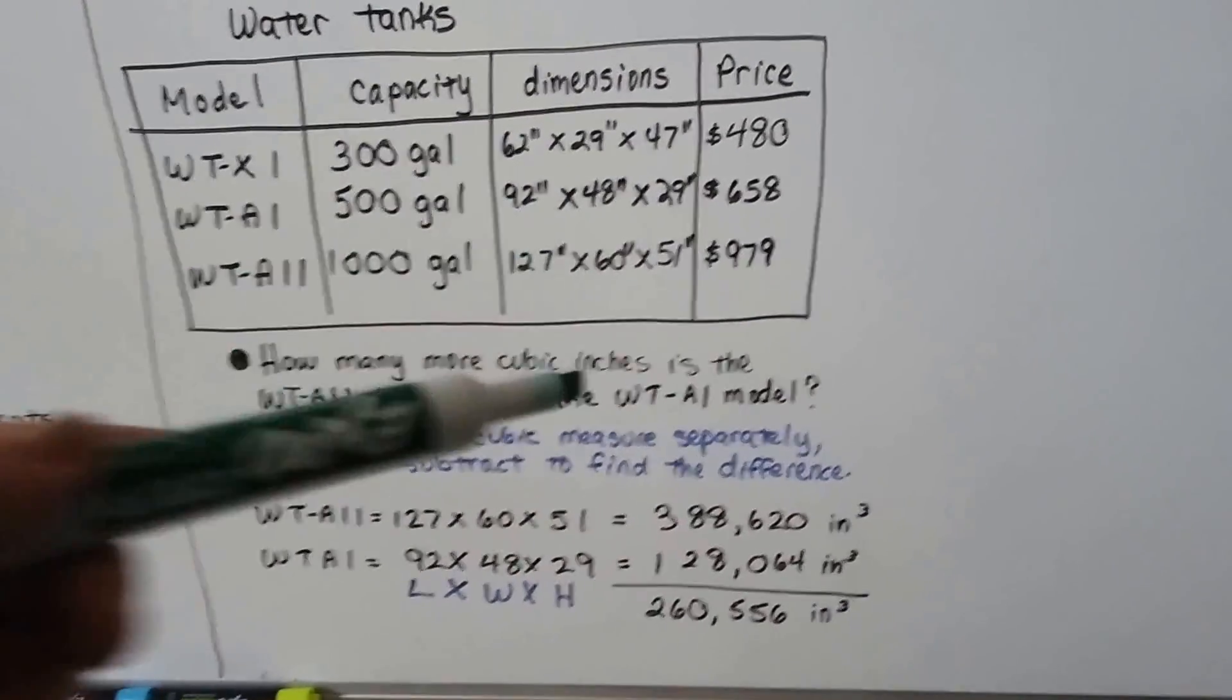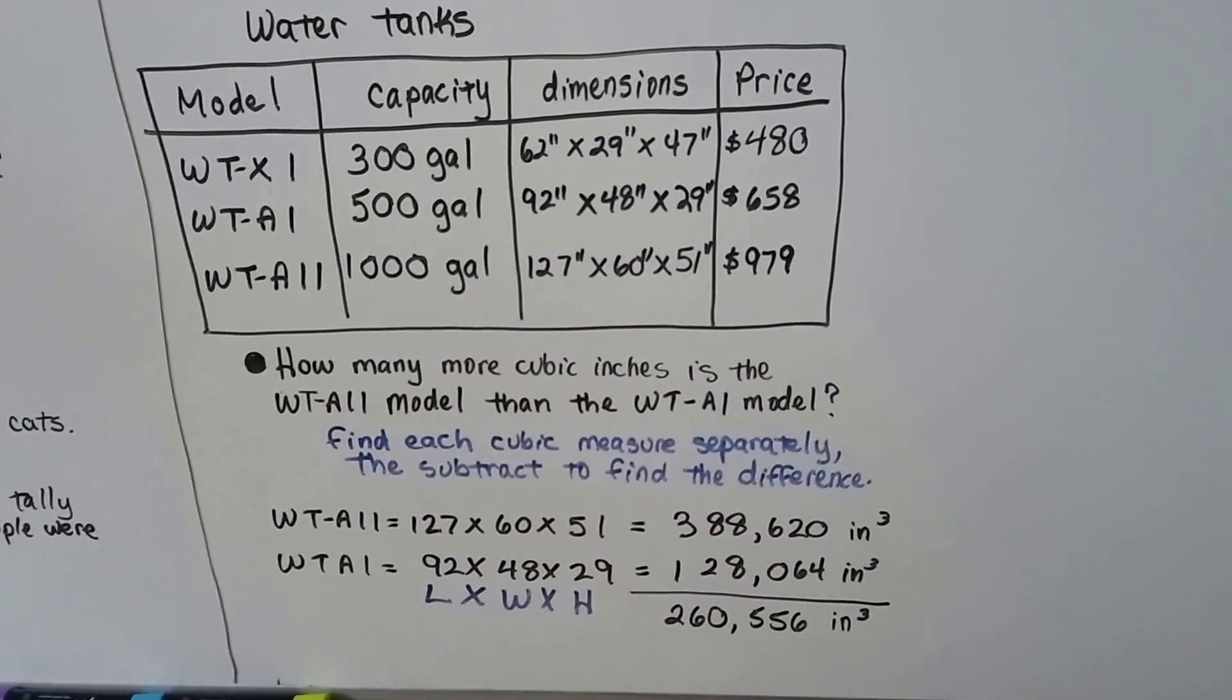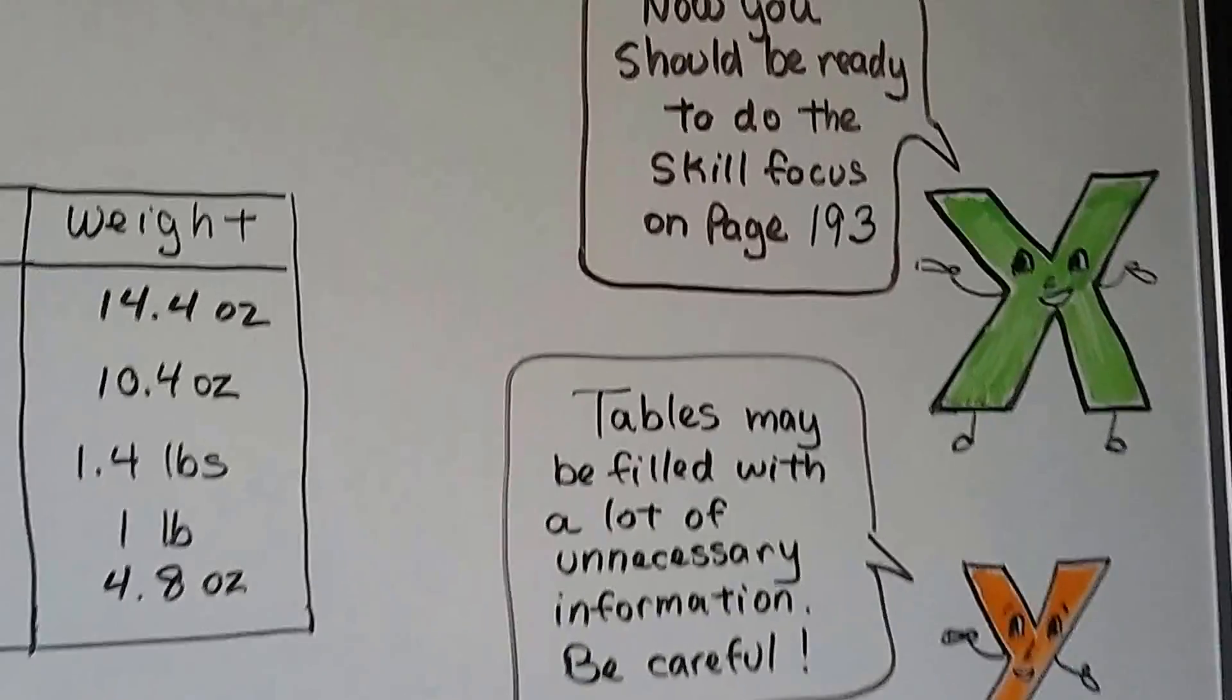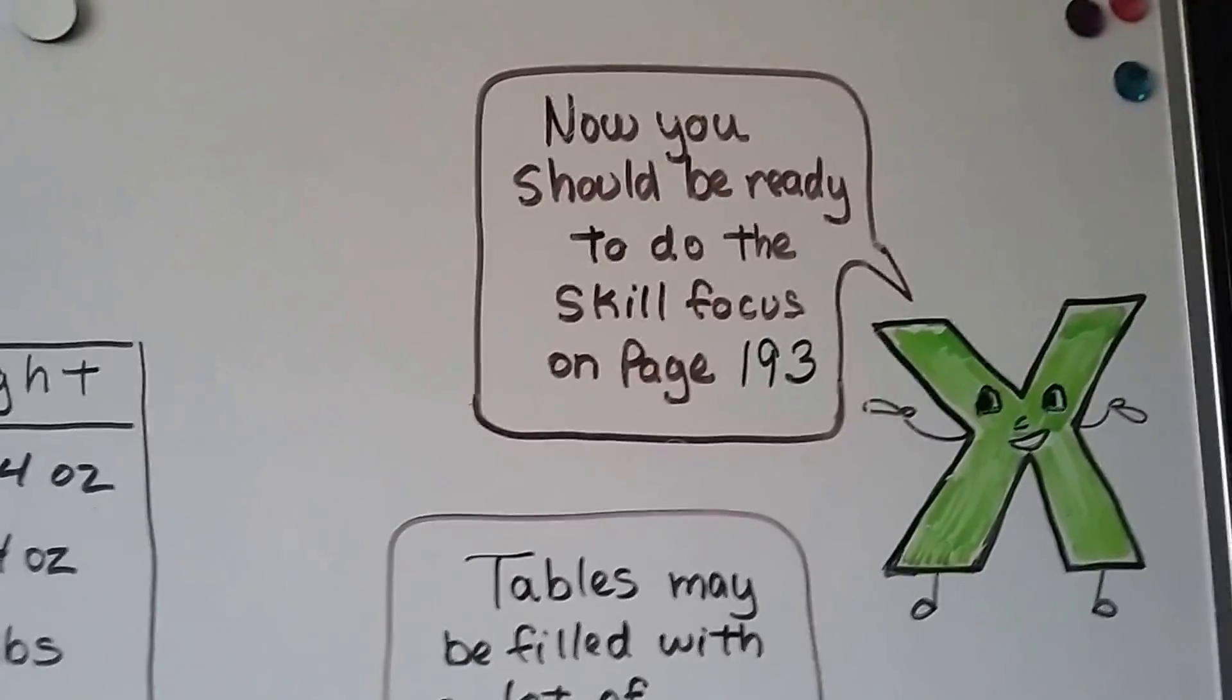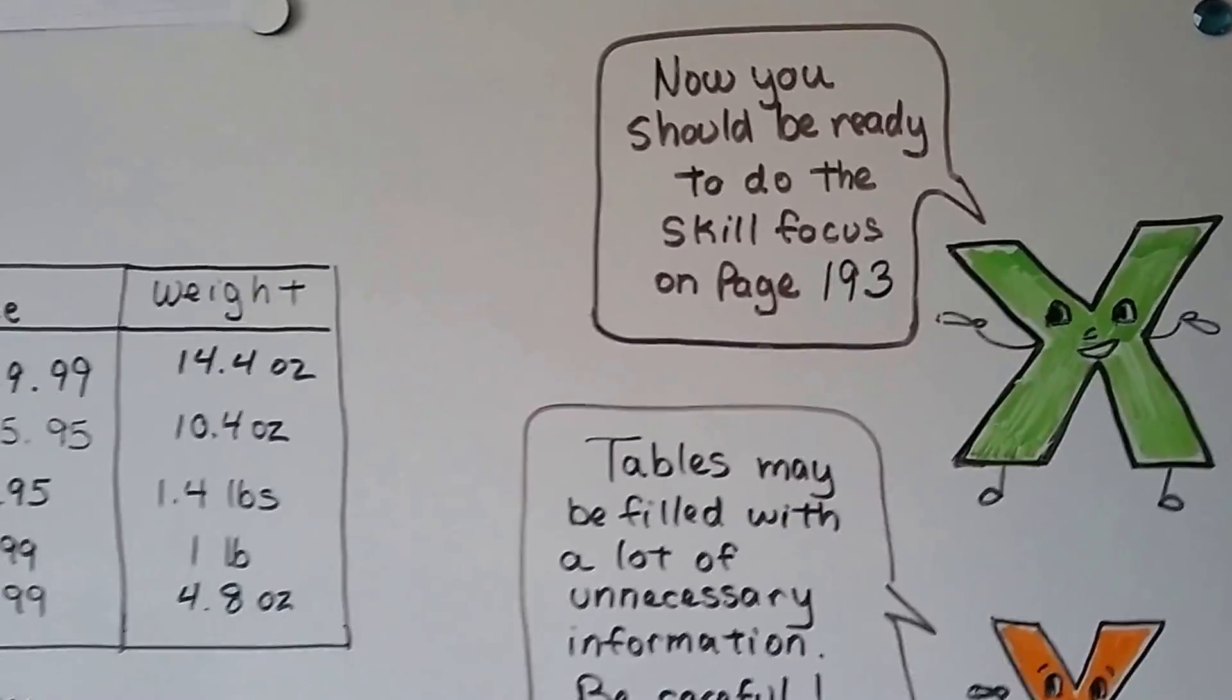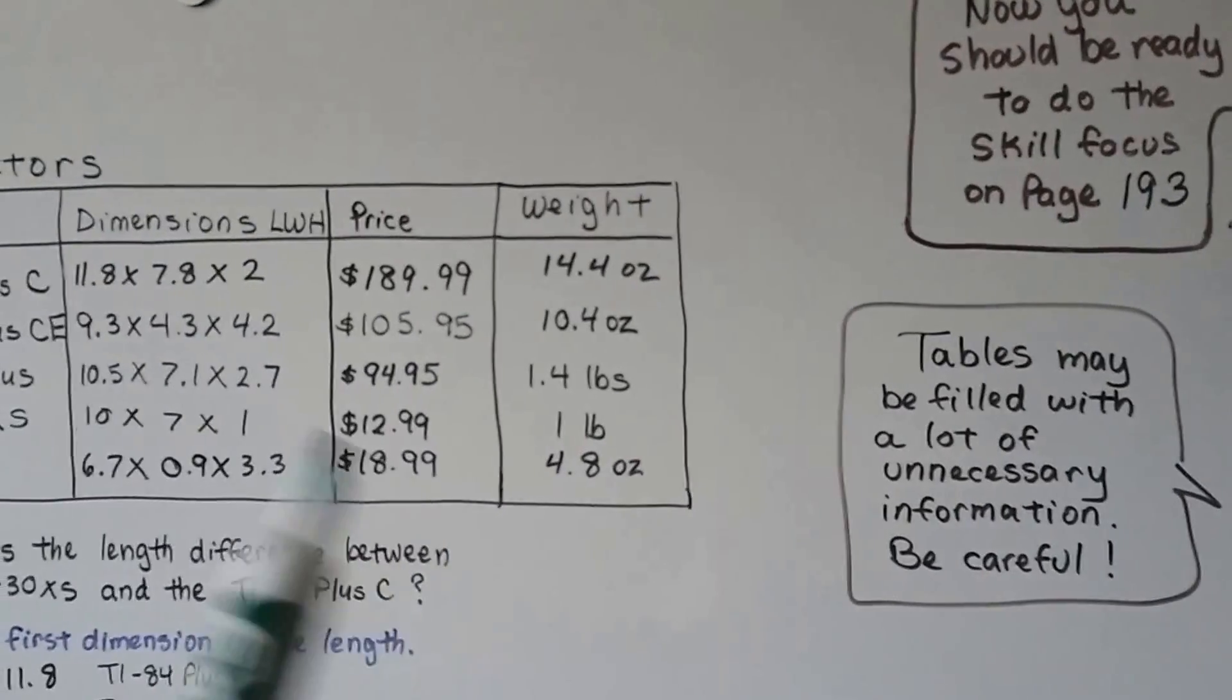But you're going to have problems where you're actually going to have to use the information in a formula or in an equation in order to find out what it's asking. So be careful. You should now be ready to do the skill focus on page 193. And I hope everything's okay, and I hope you can do it. But just all I can say is watch out for the unnecessary information.